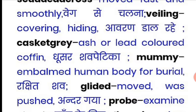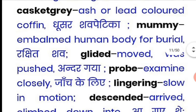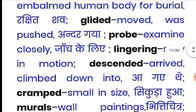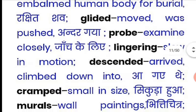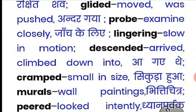'Mummy' means an embalmed human body preserved for burial — that is, when a human body is coated and prepared and buried, the preserved form is called a mummy. 'Glided' means to move smoothly. 'Probe' means to examine or investigate. 'Lingering' means slow in motion. 'Descended' means arrived or climbed down into. 'Cramped' means small in size.